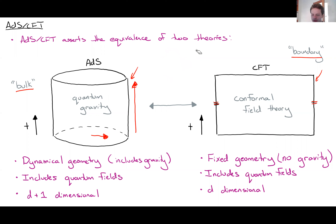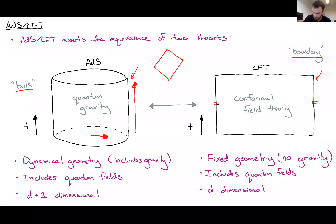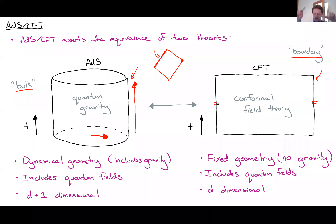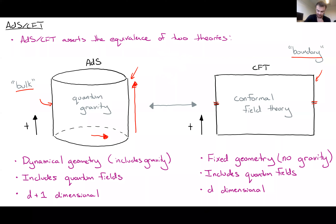Further discussion on the Penrose diagram: in AdS, the Penrose diagram is written with straight timelike boundaries that things can reach. In flat space, there's no timelike infinity in the same sense — there are null surfaces, but no notion of a time direction at spatial infinity. This is part of what makes AdS special and difficult to generalize to other spacetimes.